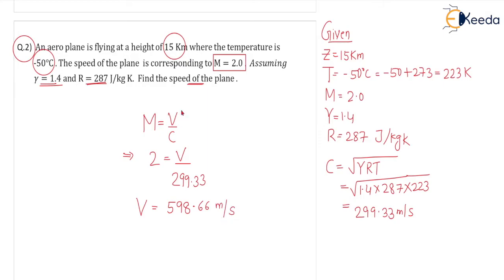Speed of the plane they have asked you. You can either write this value or you can also convert into kilometers per hour. V equals 598.66 times 18 by 5. If you multiply by 18 by 5, you will be getting the same speed in kilometers per hour, that is 2155.17 kilometers per hour.